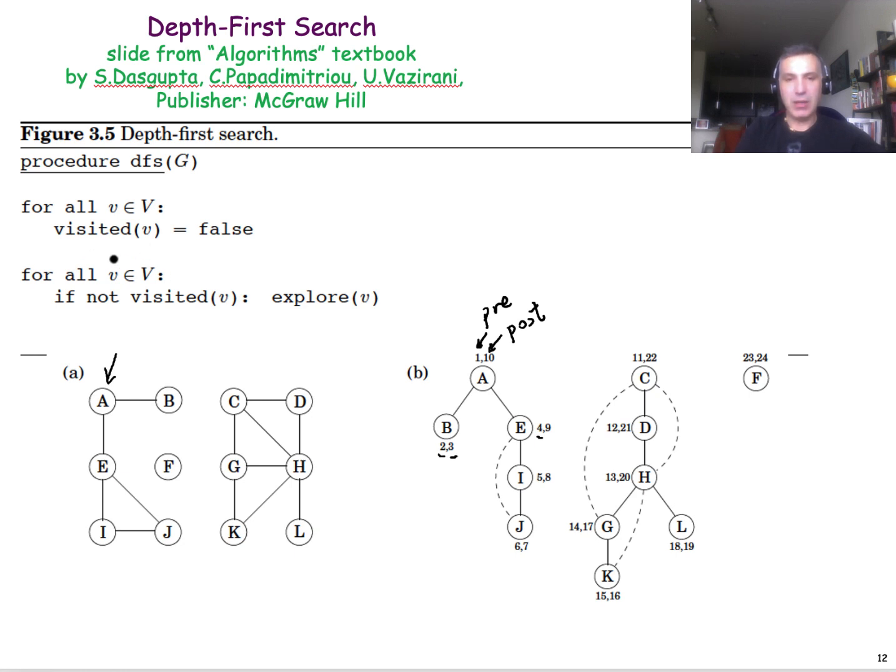where initially, of course, we flag all the nodes as not visited, and then for every node in the graph, if we have not visited that node, we call the explore function that I showed you in the previous page.